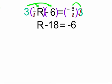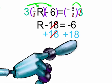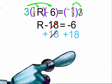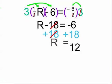We want to isolate r on one side, which means we need to get rid of the negative 18. So we will add 18 to both sides. The two 18's cancel out, and on the other side 18 minus 6 equals 12. So our answer is r equals 12.